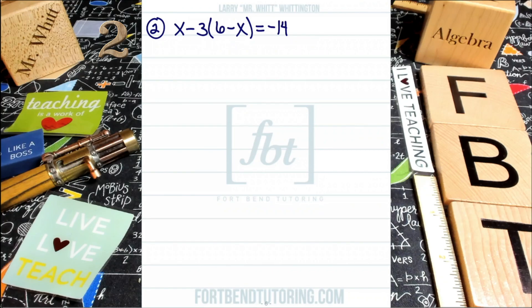notice that we have two terms on the left side of the equation. What do I mean by that? The first term is the variable x. The second term is this product of negative 3 times the quantity of 6 minus x. All of that is considered one term because multiplication combines elements into one term. It doesn't separate them into multiple terms.